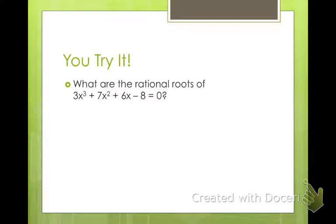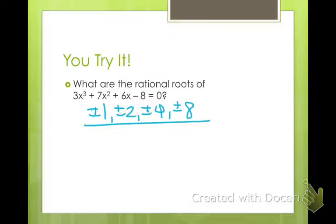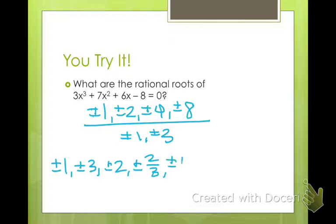So our possible roots of our constant are ±1, ±2, ±4, ±8. Our possible leading coefficient roots are ±1, ±3. So that doesn't leave us with a whole lot of options, but I get ±1, ±3, ±2, ±2/3, ±4, ±4/3, ±8, ±8/3.